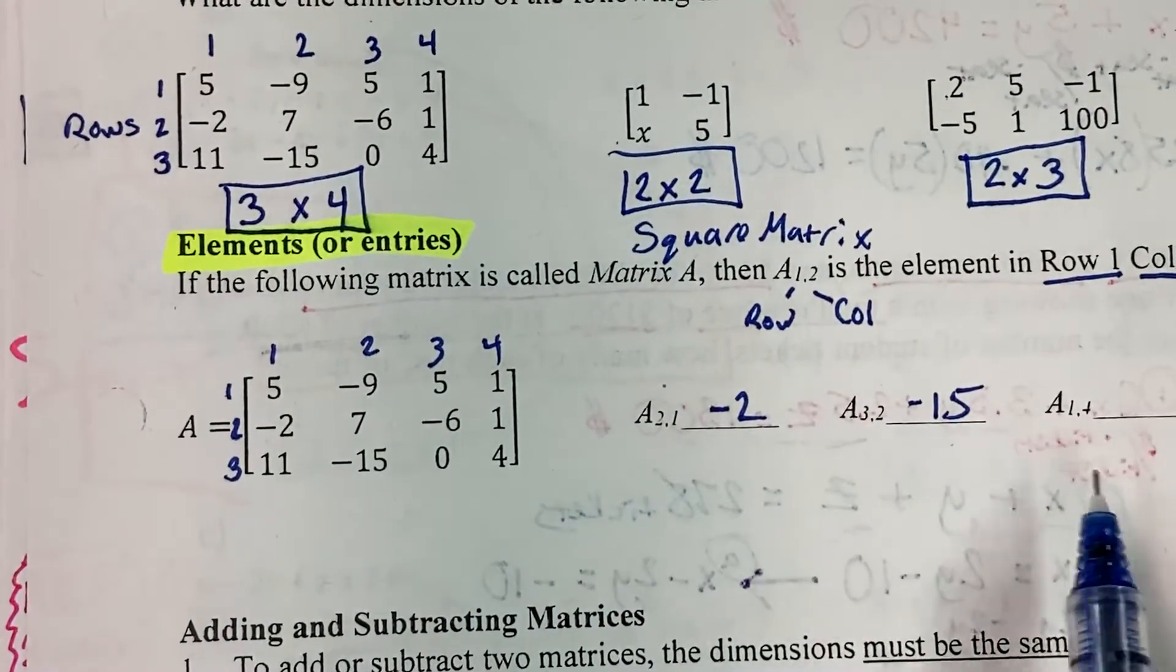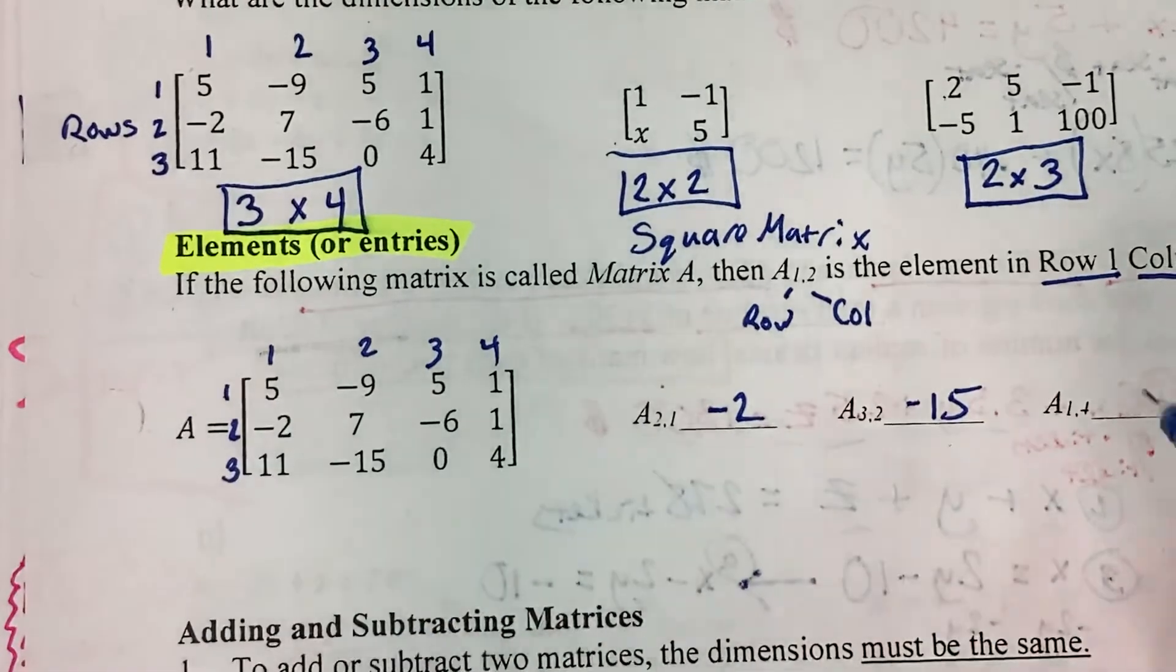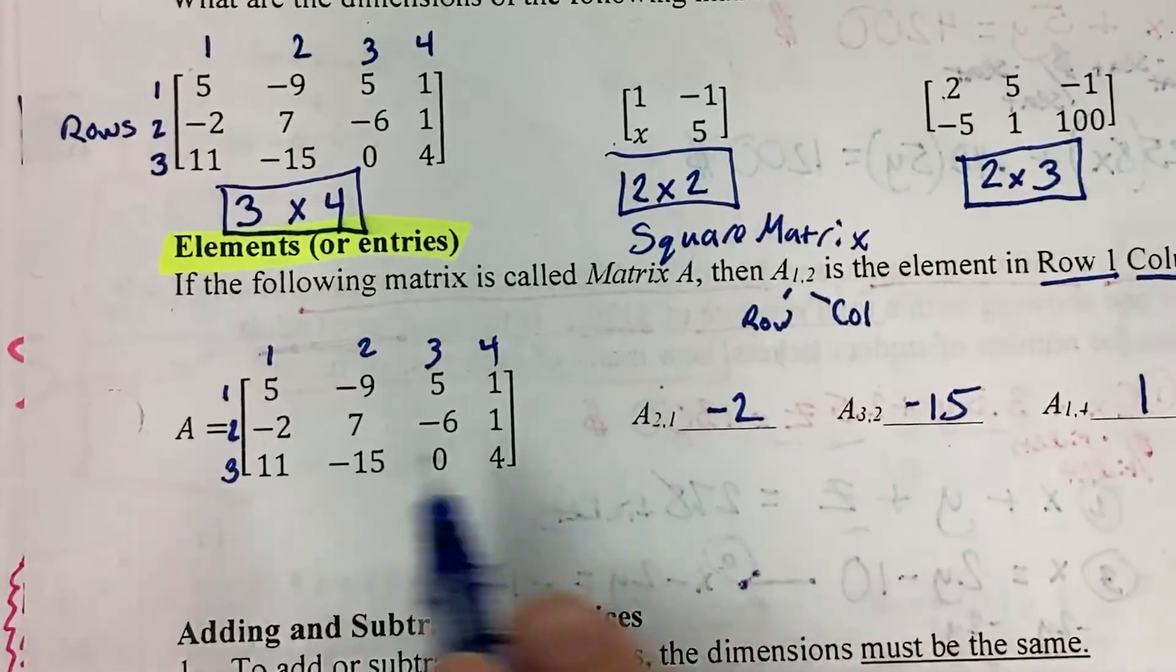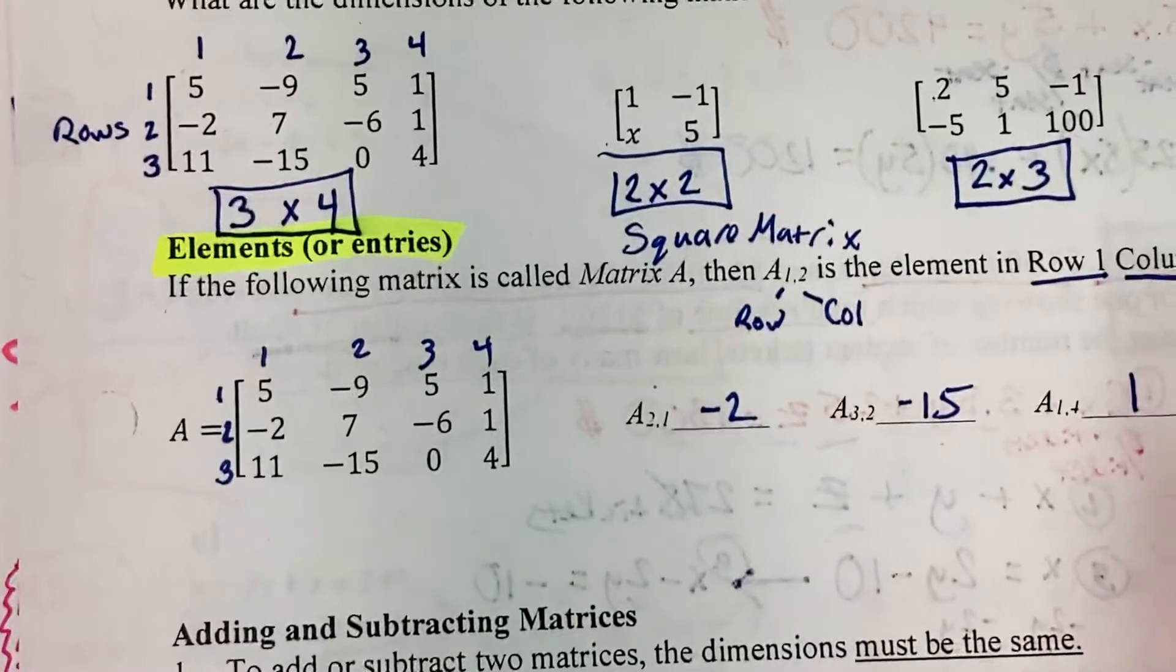And for the last two, row 1, fourth column, would be 1. And then second row, third column, would be negative 6.